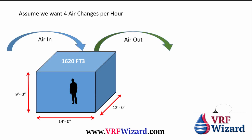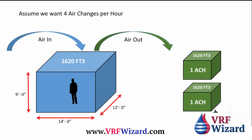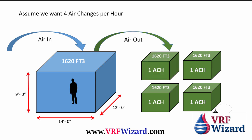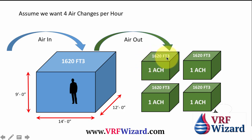Step two: assume we're going to do four air changes. We're going to do this four times in an hour — we're going to remove air out of this room equivalent to four times its volume within an hour. The room volume is 1620 cubic feet for each exchange, because that's the volume of the room. Every time we take out that volume in an hour, that's considered one air change.